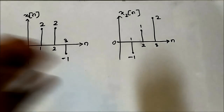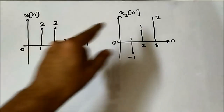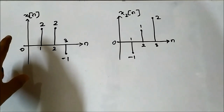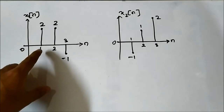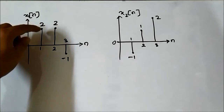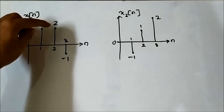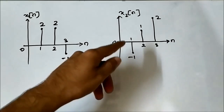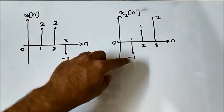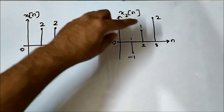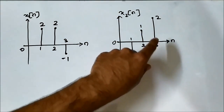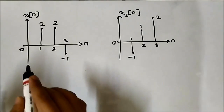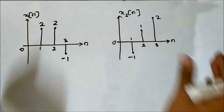Here we have another two discrete time signals x1[n] and x2[n] with respective amplitudes. For x1[n]: at n=0 it is 0, at n=1 it is 2, at n=2 it is 2, and at n=3 it is -1. For x2[n]: at n=1 it is 1, and at n=3 it is 2.